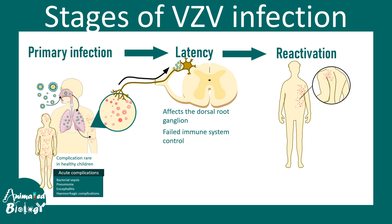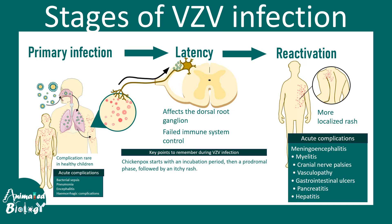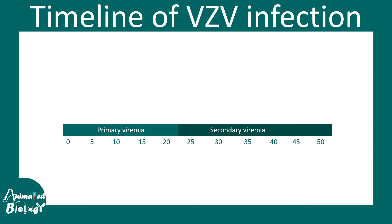As the body's immune system weakens with age — around age 50 — reactivation can occur, leading to shingles. Shingles presents as more localized rash, often asymmetrically on one side of the body, depending on which dorsal root ganglion is affected. Complications can include myelitis, vasculopathy, gastrointestinal ulcers, and pancreatitis. The blistering rashes in shingles are localized and may be asymmetric.